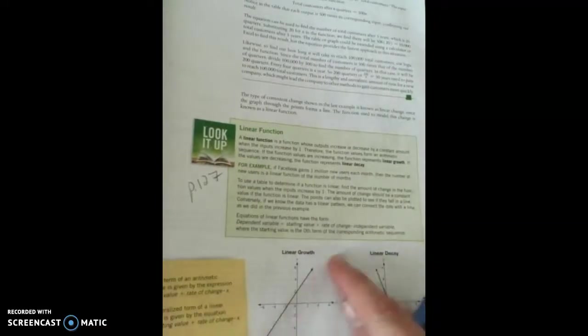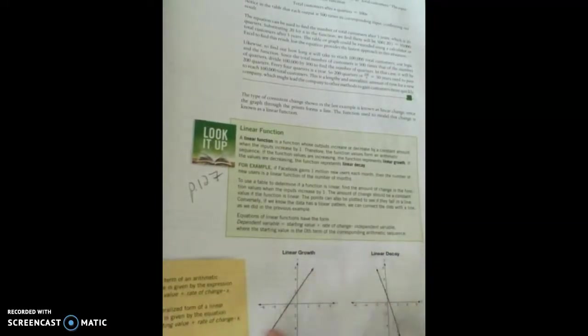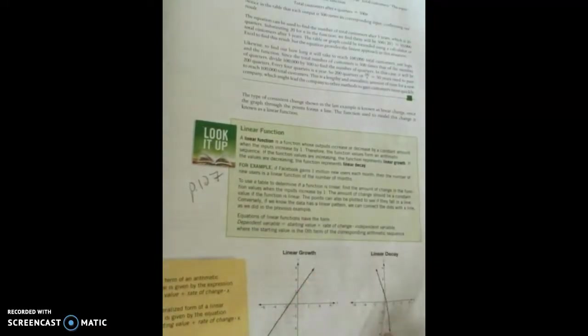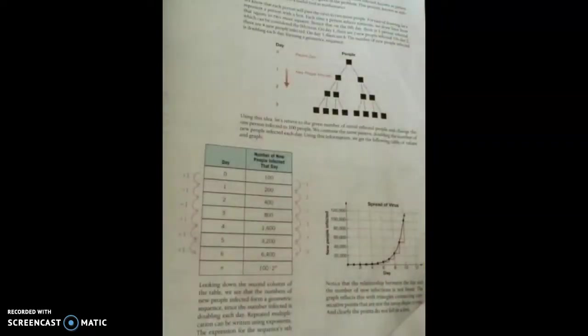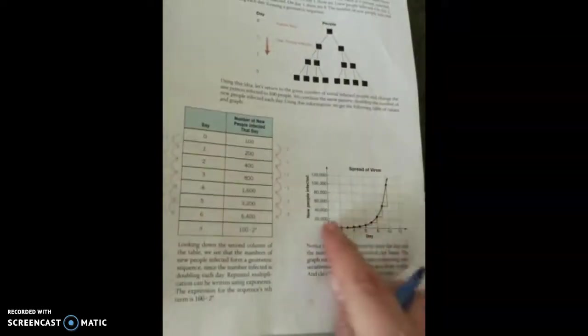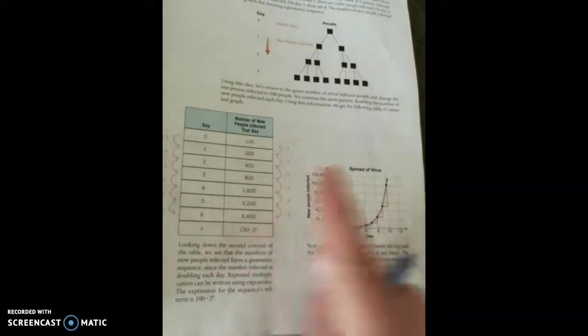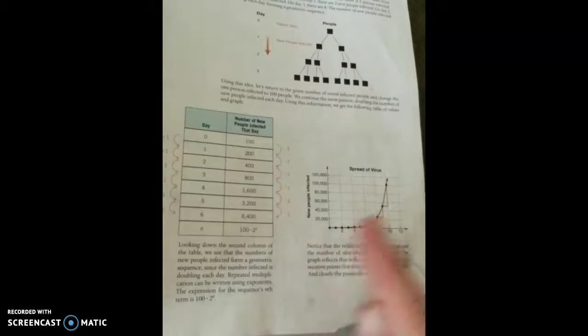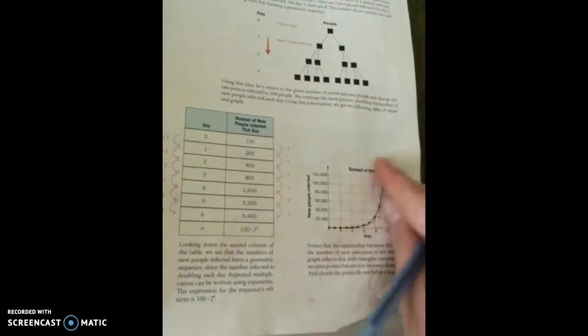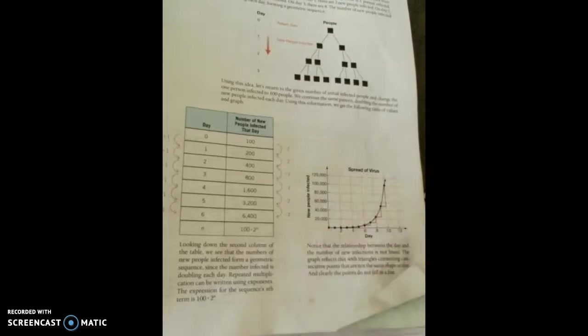When it's linear, obviously it's a constant adding or subtracting. Linear growth is when we're adding, linear decay is when we're going down. And it's going to start out kind of looking linear, but then it takes off later.